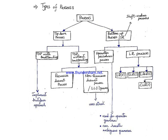This is our main characterization of parsers, which we also call a syntax analyzer. We have two main types of parsers: top-down parsers and bottom-up parsers, also called shift-reduce parsers. Top-down parsers are further categorized into TDP with backtracking and TDP without backtracking.